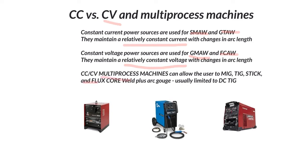CCCV machines are multiprocess machines that can allow the user to MIG, TIG, stick, and flux core, or sometimes arc gouge, and sometimes these are limited to DC TIG. There's no AC with that, but some of these newer machines are actually including the AC, which is pretty sweet.